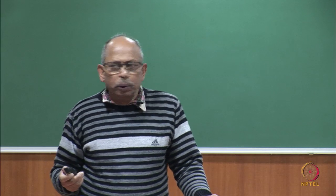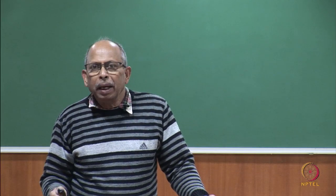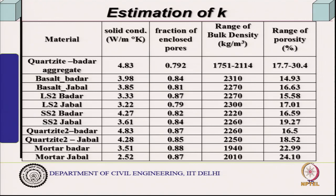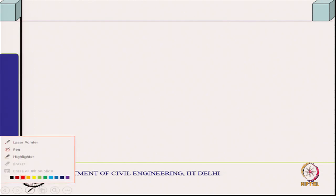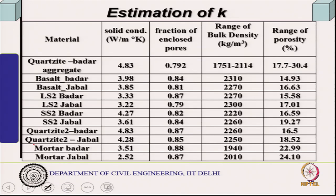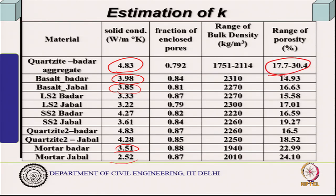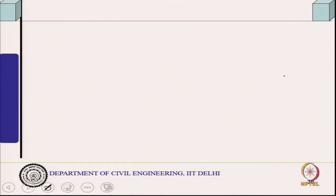We will continue from where we left last class. We were trying to estimate K, thermal conductivity. We were talking about estimating solid conductivity for various kinds of concrete — concrete with different types of aggregates. One can actually estimate the solid conductivity for mortar and concrete. We are also looking at their porosities, which can be determined through water permeable porosity tests, since water permeable porosity can be very easily measured.